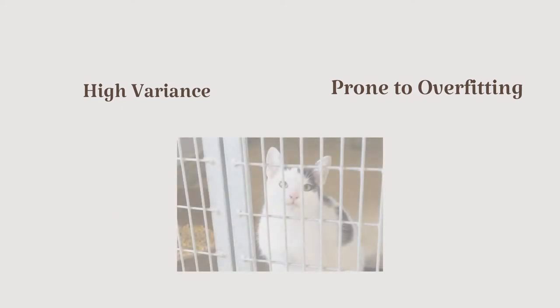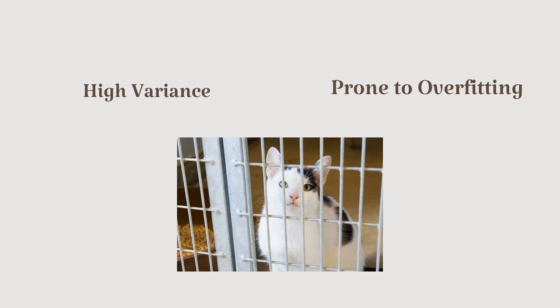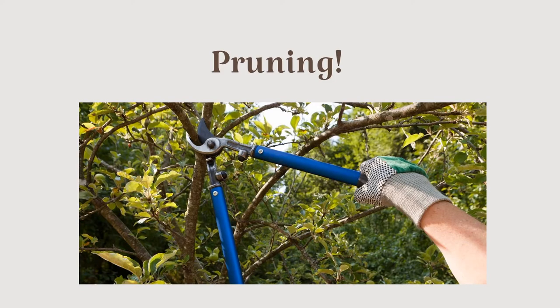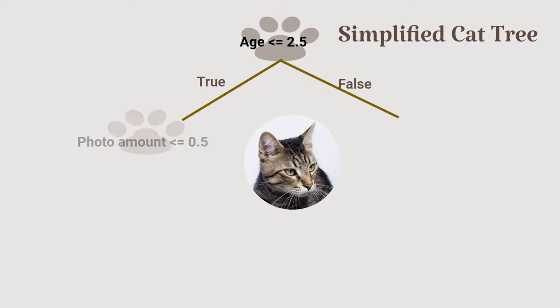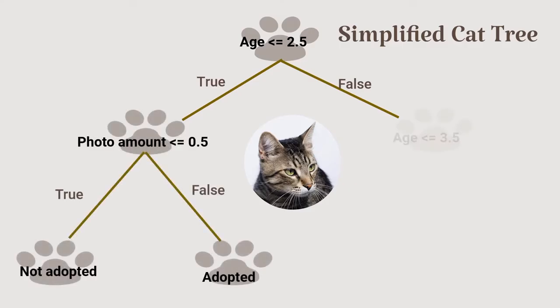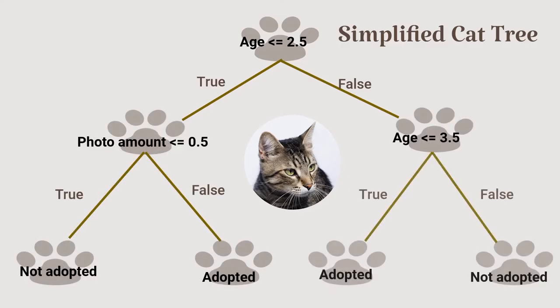Does this mean our pets are doomed? Worry not. To combat these problems, we limit the size of our decision tree model instead. Doing so will ensure that our trees don't get too expressive and capture the training data too specifically. We can cut down a monster of a tree like this into something more general, such as this pruned tree.